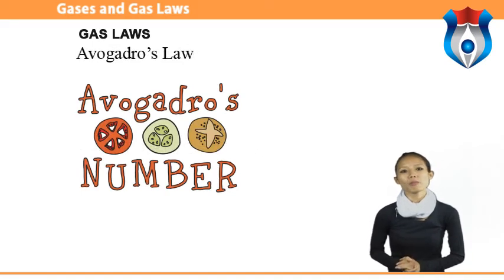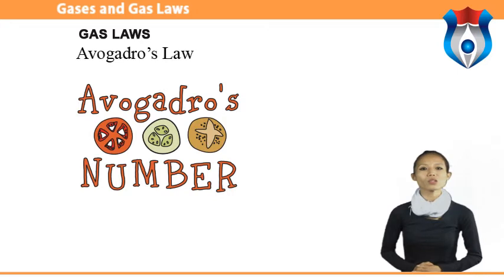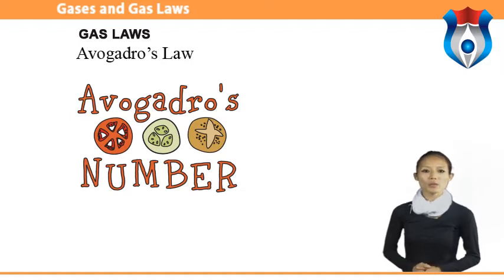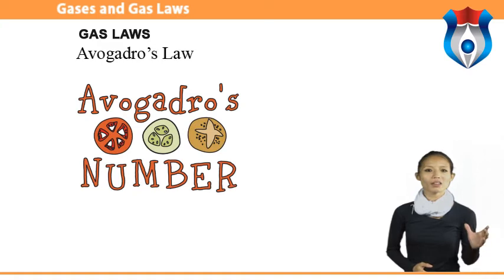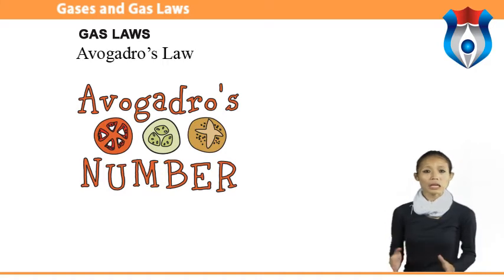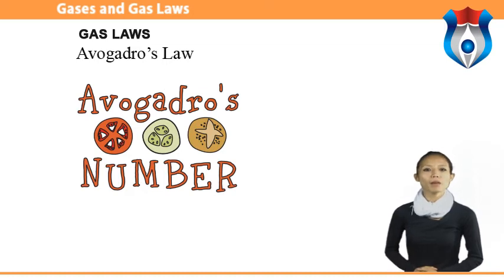Avogadro's law: Avogadro's number is 6.02 × 10²³ atoms in a mole. Although it is always the same number of particles, the mass and weight vary by element. The law states that the volume a gas takes up is directly proportional to the number of moles of gas. The equation is V = k₄n, meaning the number of moles n multiplied by a constant k yields a specific volume V.